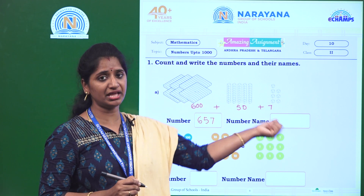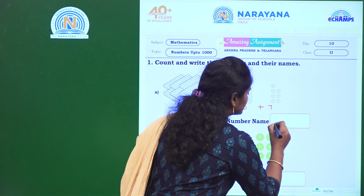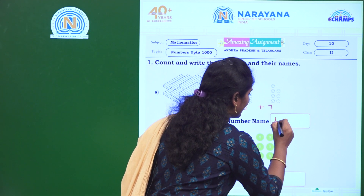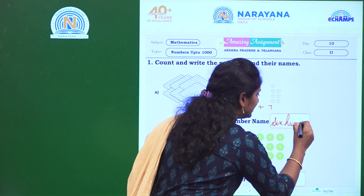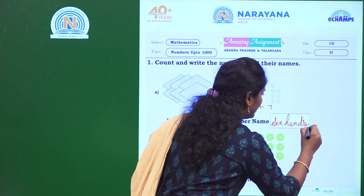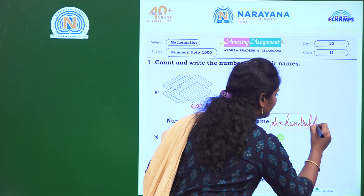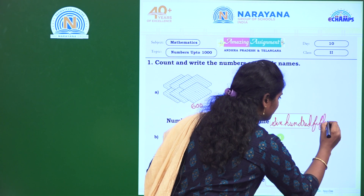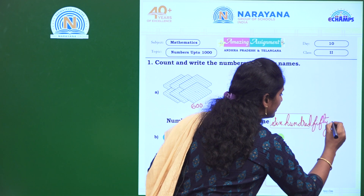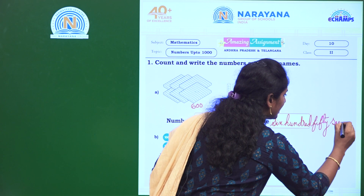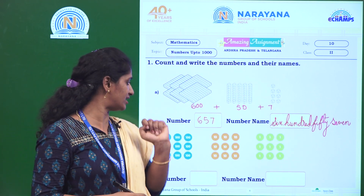What is the number name here? What is the spelling of 657? Spell it: S-I-X, six hundred. H-U-N-D-R-E-D, hundred. 57: F-I-F-T-Y, fifty. What is the spelling of 7? S-E-V-E-N, seven. 657.